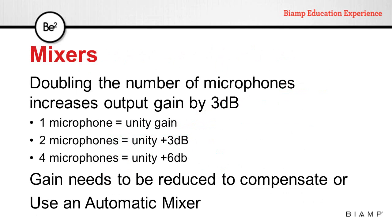In the case of mixers, every time that we double the number of open microphones, the output gain of that mixer is increased by 3 dB. Depending on the number of open microphones on a mixer, it's necessary to reduce the gain to compensate for that. Depending on the application, this can be solved with an automatic mixer, as these devices will adjust gain automatically depending on the number of open microphones.